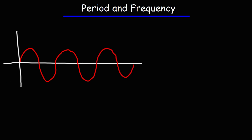The time it takes to complete a cycle is known as the period, and the symbol that represents the period is capital T. The distance between cycles is the wavelength, which could be in units like meters, feet, or miles, but meters is the most common unit for wavelength.